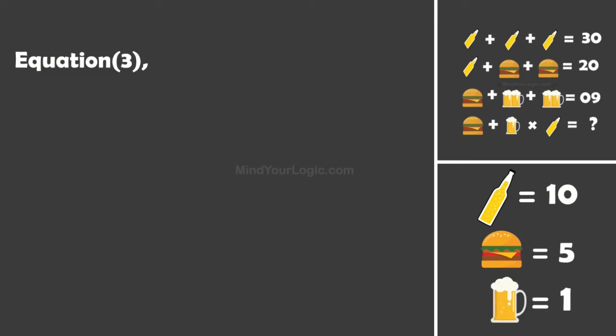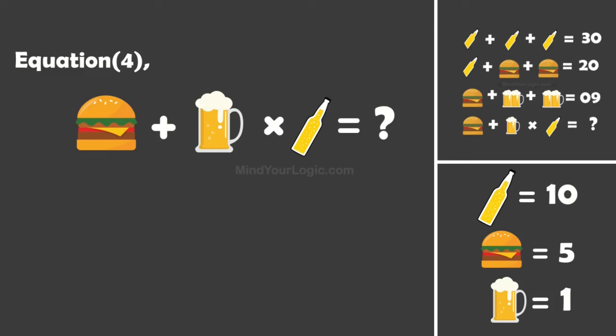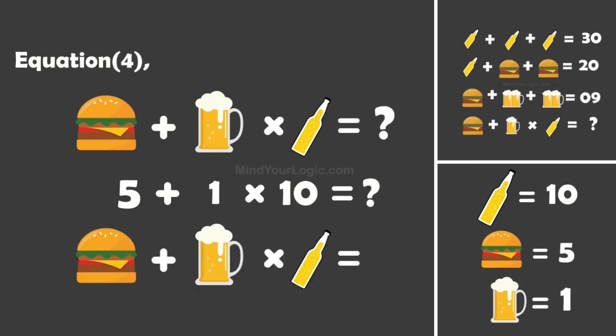Now, solving the final equation: Burger plus Beer multiplied by Bottle equals question mark. On substituting the values and applying BODMAS rule, we get the final equation value as 15.